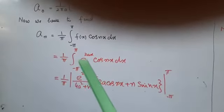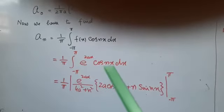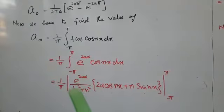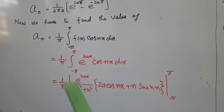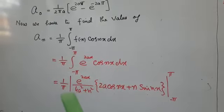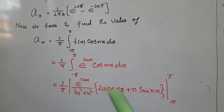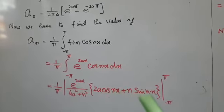Now here is the exponential function and cos nx. This is integration by parts. We have solved this integration by parts. The value is e to the 2ax over 4a² plus n² into 2a cos nx plus n sin nx.